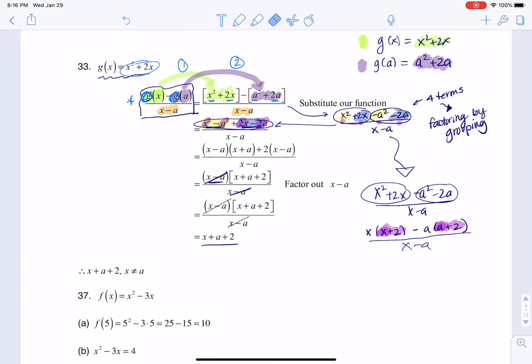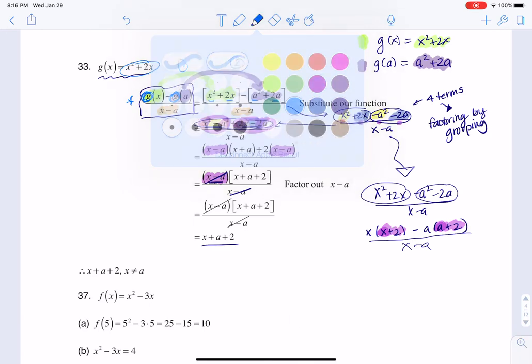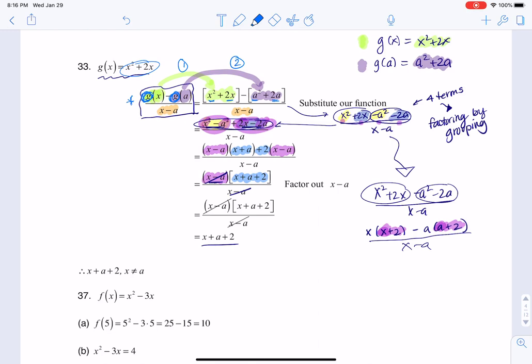When I factored out this difference of squares and the 2 here, you see the common factor of x minus a and x minus a. And that's what I factored out here. And then what was I left with? I was left with x plus a plus 2. And that's what I got here.